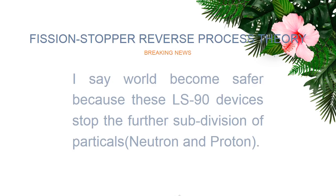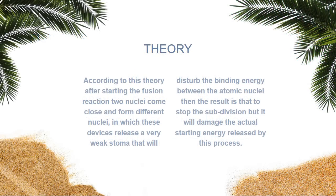Fission Stopper Reverse Process Theory — I announce breaking news: the world becomes safer because these LS90 Devices stop the further subdivision of particles, neutron and proton. According to this theory, after starting the fusion reaction, two nuclei come close and form different nuclei, in which these devices release a very weak field that disturbs the binding energy between the atomic nuclei, stopping the subdivision without damaging the initial energy released.